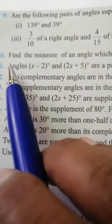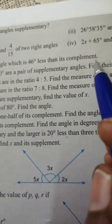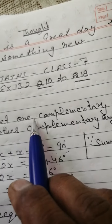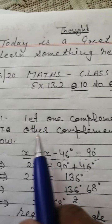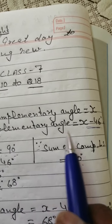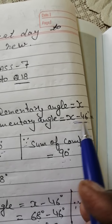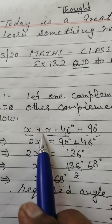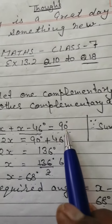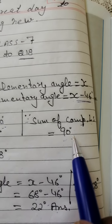Question number 10: Find the measure of an angle which is 46 degrees less than its complement. Solution: Let one complementary angle equal x. According to the question, the other complementary angle is equal to x minus 46 degrees because it is 46 degrees less. Now add these two angles: x plus x minus 46 degrees equals 90 degrees, because the sum of complementary angles is equal to 90 degrees.